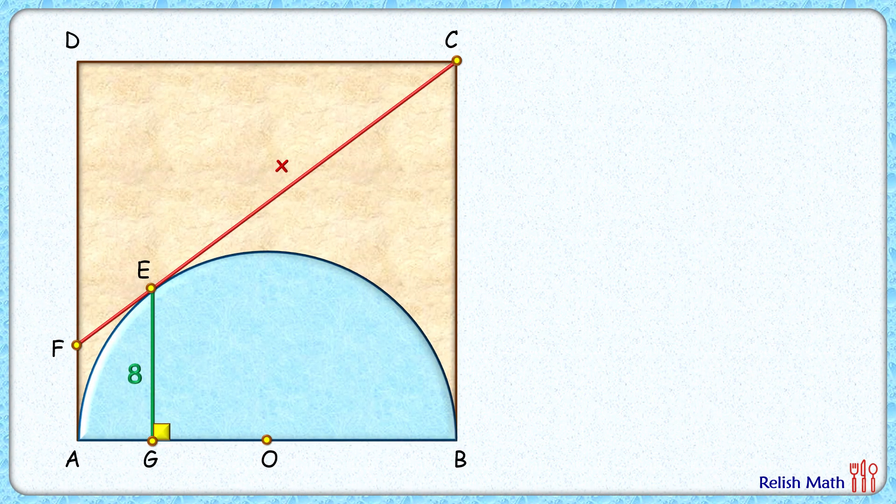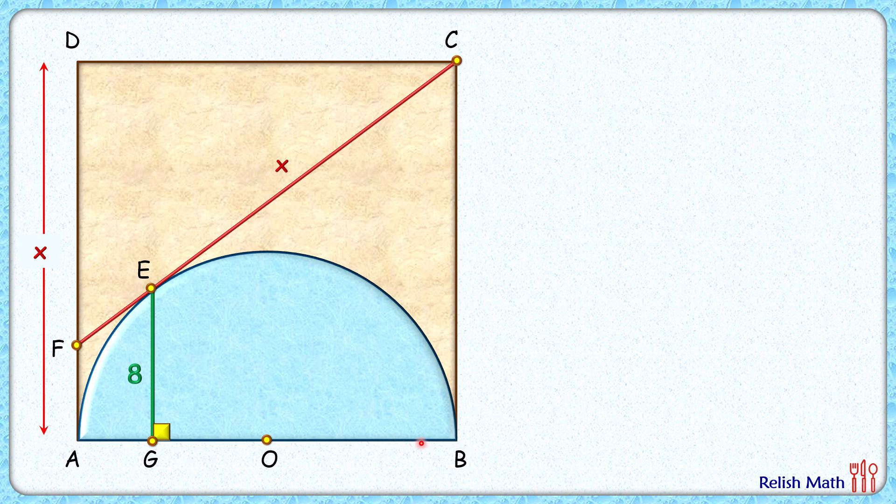Okay, let's check this elegant solution. Let's start by assuming the side length of the square is x centimeters. Now AB is the diameter and that's x centimeters, so radius OB of the semicircle will be x by 2.